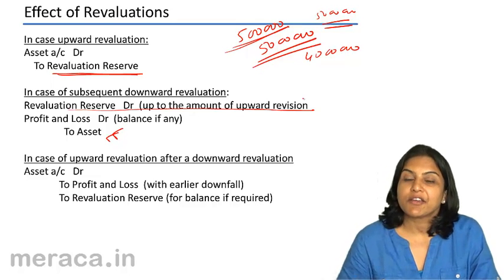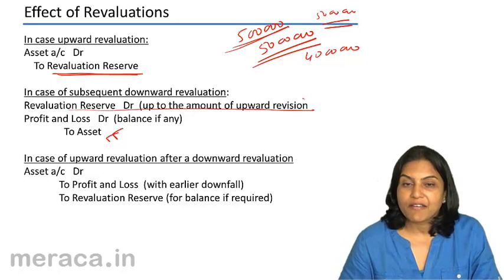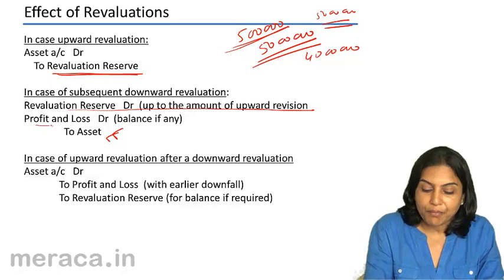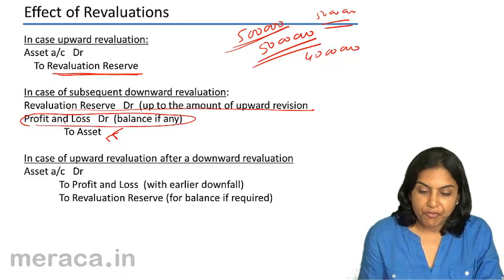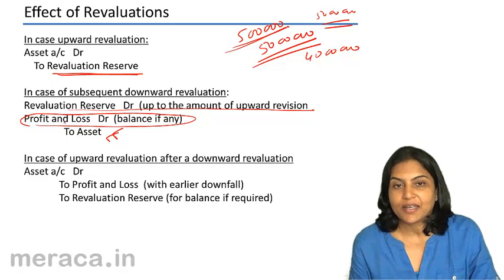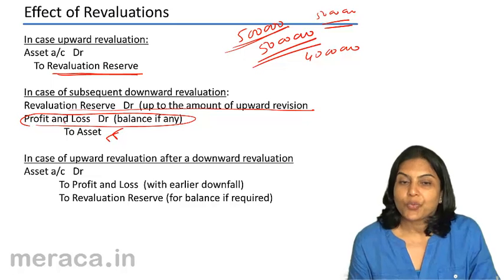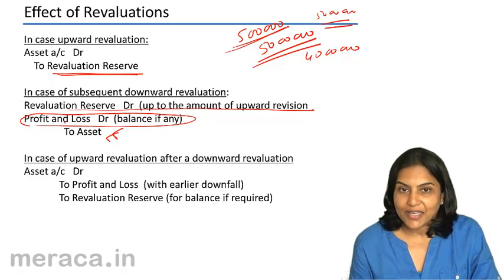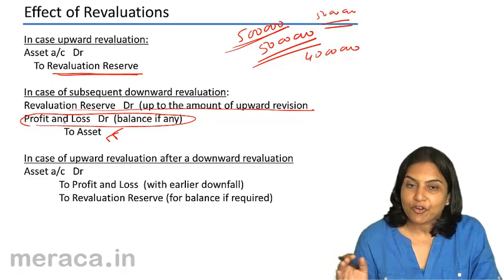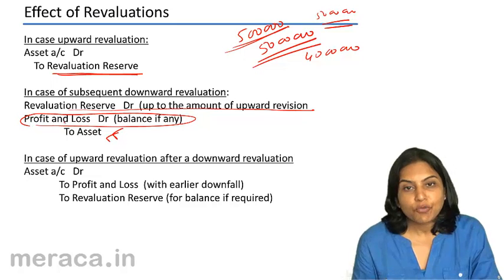If the downward revaluation is only 10 lakhs, we debit revaluation reserve and credit asset by 10 lakhs. If, however, the revaluation was for more than 45 lakhs, then revaluation reserve will be debited for 45 lakhs and for the remaining amount, we will debit the profit and loss account. Therefore, in case of an upward revaluation, the entry is to debit asset and credit revaluation reserve. In case of subsequent downward revaluation, we debit revaluation reserve and credit asset, provided there is sufficient revaluation reserve. If not, the balance amount is debited to profit and loss account.